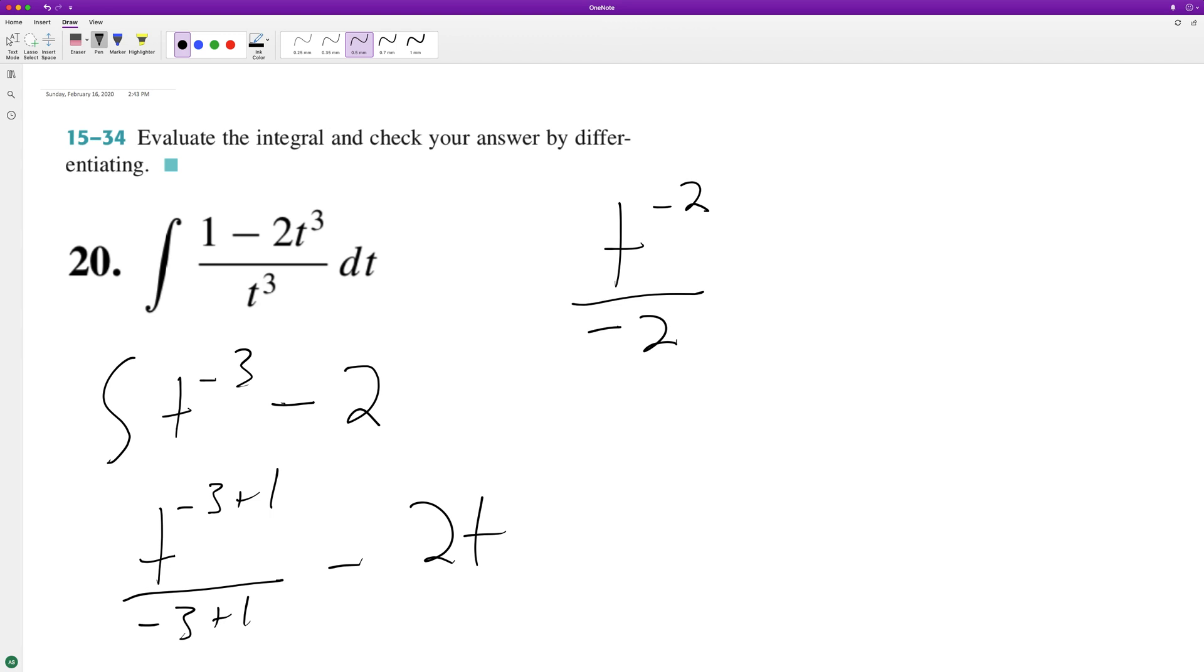Or negative 1 half times t raised to the negative 2 minus 2t, or negative 1 over 2t squared minus 2t.